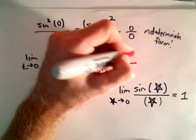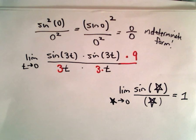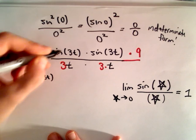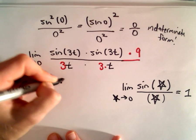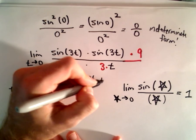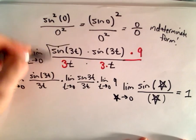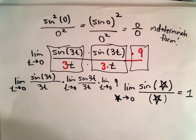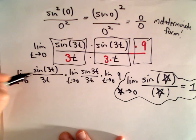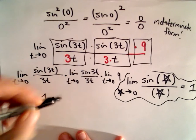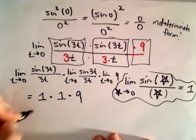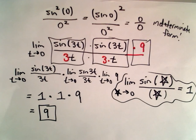Since I've multiplied the denominator by 9, all I have to do is multiply the numerator also by 9. Now the limit law says we could write this as the limit as t approaches 0 of sine of 3t over 3t, times the limit as t approaches 0 of sine of 3t over 3t, times the limit as t approaches 0 of 9. So these two limits both equal 1, and the limit of a constant is always the constant. We're left with 1 times 1 times 9, or the value 9.